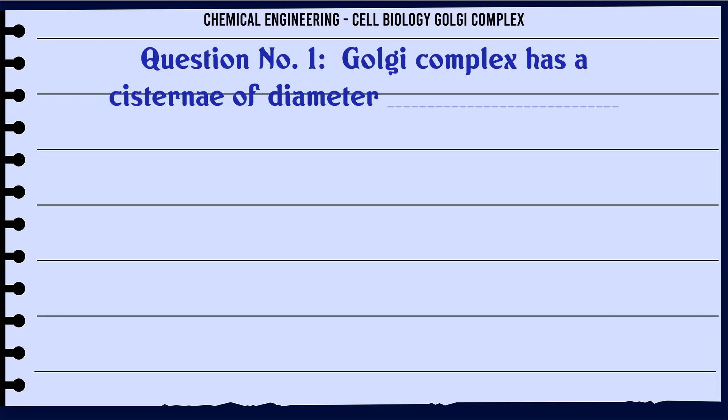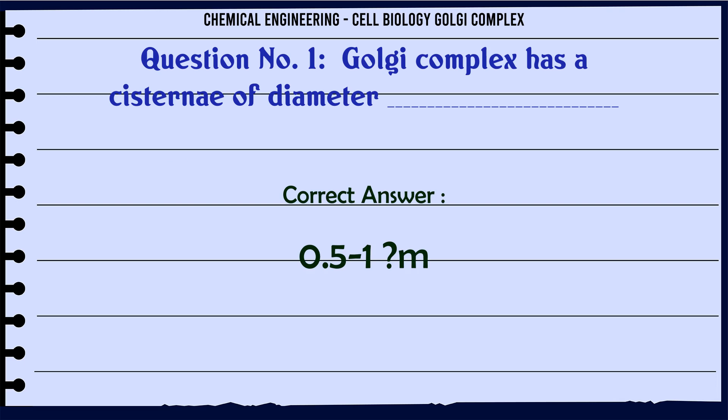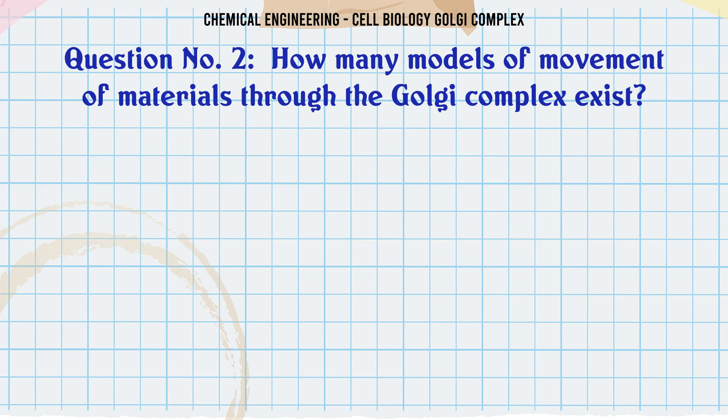The Golgi complex has a cistern of diameter: A) 0.51 mm, B) 0.51 nm, C) 0.51 pm, D) 0.51 m. The correct answer is 0.51 m.